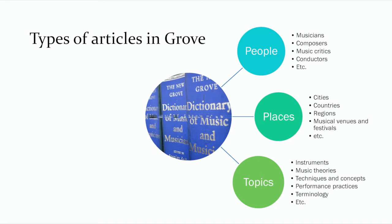Before showing you a couple of searches in Grove Music Online, I'm going to give you some information on what types of articles you'll find in this resource. Grove Music Online includes a number of different types of articles, including articles about people, about significant places, and about musical topics. Examples of the types of people it includes are musicians, composers, conductors, and music critics.